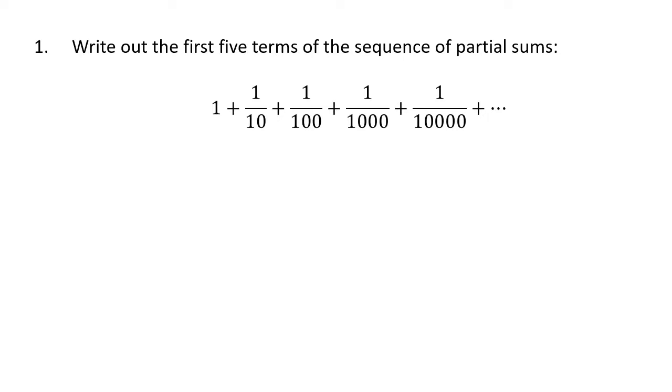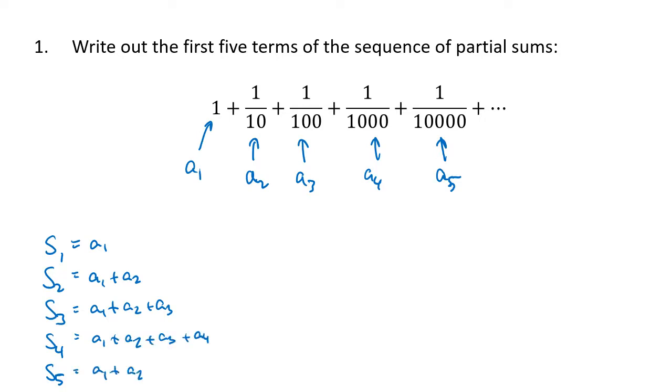When we talk about the sequence of partial sums, these individual terms of the series are what we've been calling a₁, a₂, a₃, a₄, and so on. Those are the numbers that we're actually adding. But then the sums, the partial sums, that's what we actually get when we start doing the adding. So s₁ is just a₁, but s₂ is a₁ plus a₂, and s₃ is a₁ plus a₂ plus a₃, and so on. a₁ plus a₂ plus a₃ plus a₄ is s₄, and s₅ is a₁ plus a₂ plus a₃ plus a₄ plus a₅.